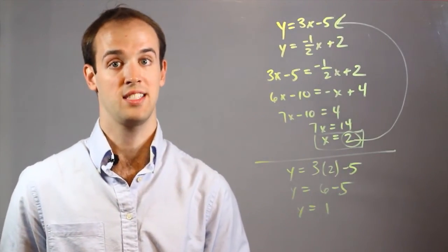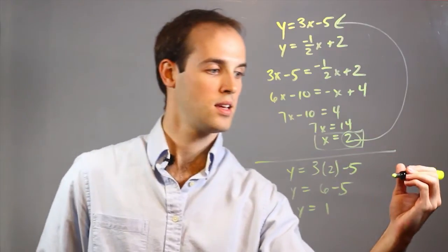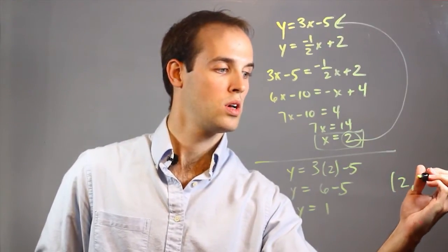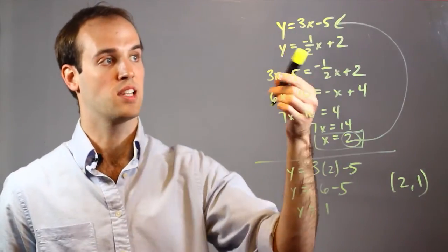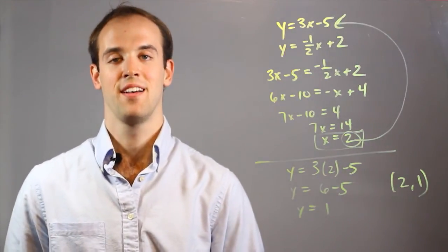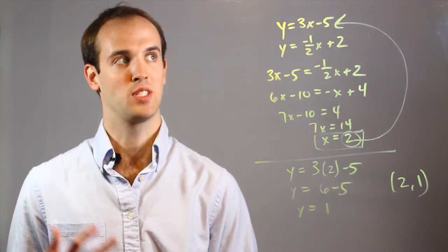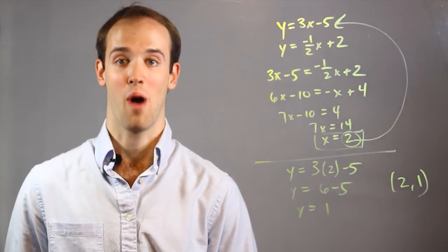So the answer to this system of equations is 2, 1. And that will be the point that both of these lines intersect. I'm Drew Moyer and this is how to do substitution in math with both y values.